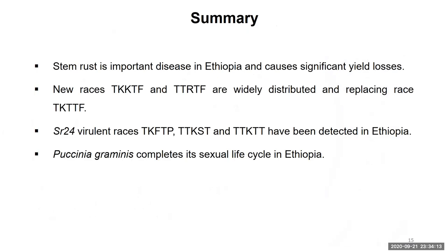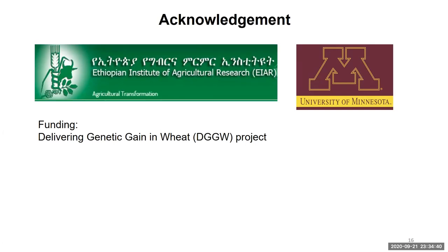To summarize: stem rust is an important disease in Ethiopia and causes significant yield losses. New races TKKTTF and TTRTF are widely distributed and replacing race TKTTF. SR24-virulent races have been detected in Ethiopia. Puccinia graminis has been confirmed to complete the sexual life cycle in Ethiopia. I would like to acknowledge the Ethiopian Institute of Agricultural Research, the University of Minnesota for giving me the opportunity to pursue my PhD, and the DGGW for funding my PhD. Thank you.